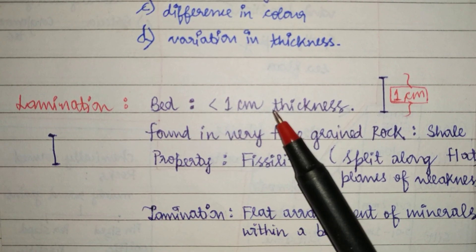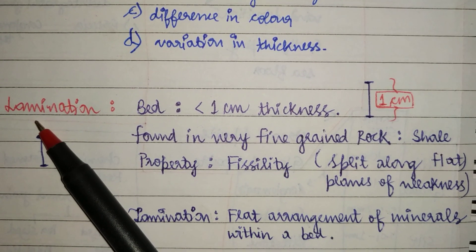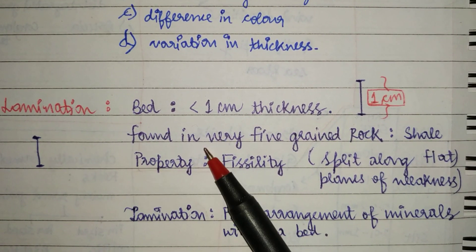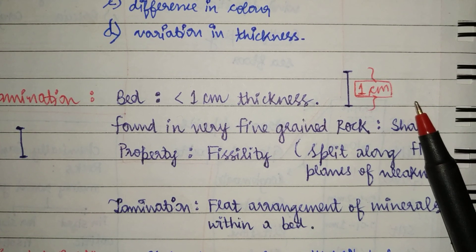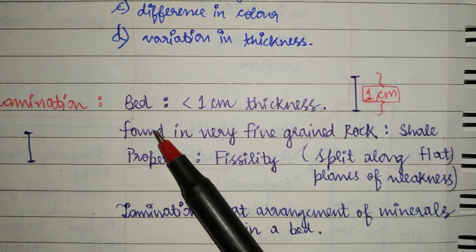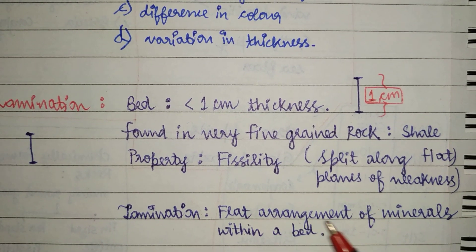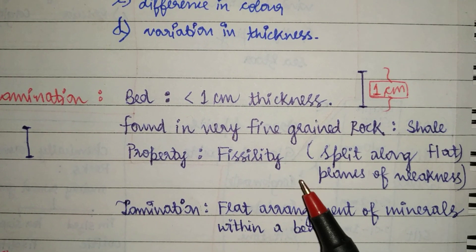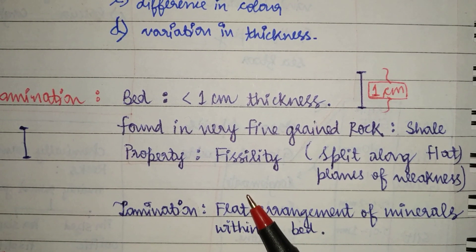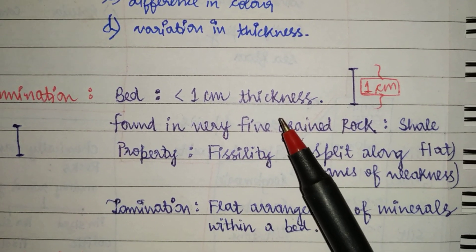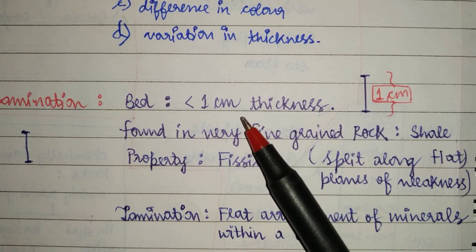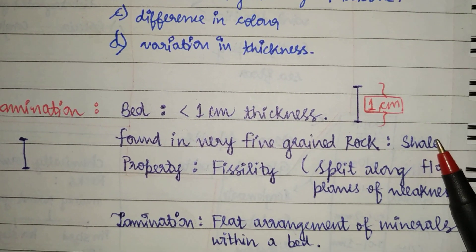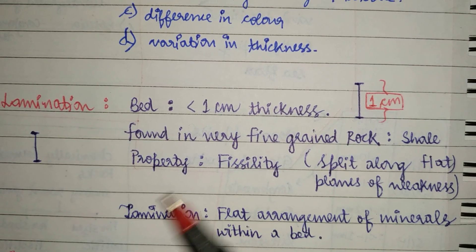When the bedding size is less than one centimeter, it is known as lamination. Laminations are found in very fine-grained rocks — for example, shale — because lamination means the flat arrangement of minerals within a bed. The probability of flat mineral arrangement is high when the environment is calm. In calm environments, only rocks such as shale and mudrock form, and hence laminations form in these rocks.